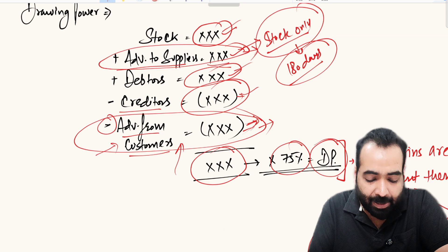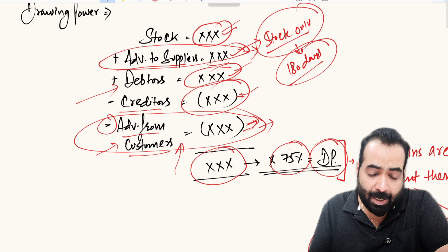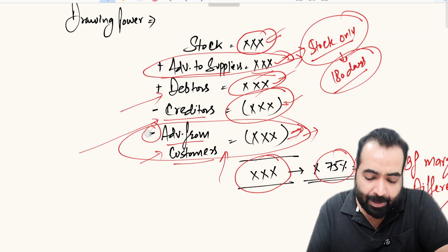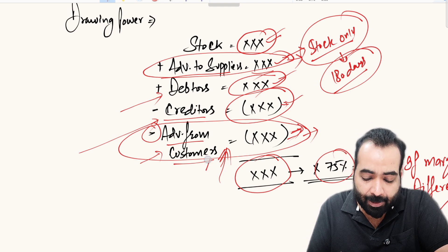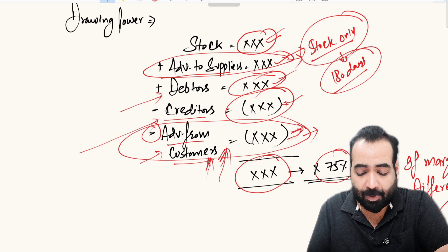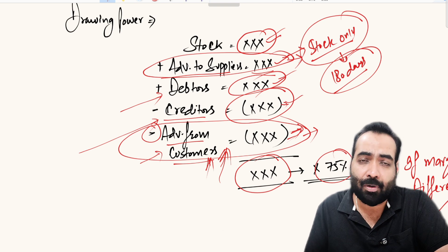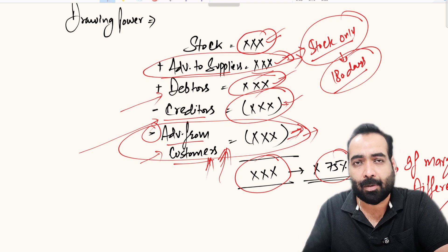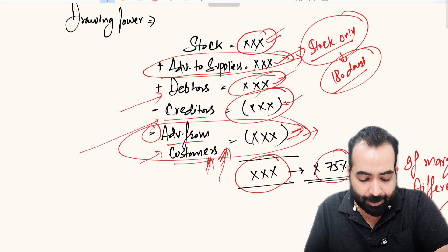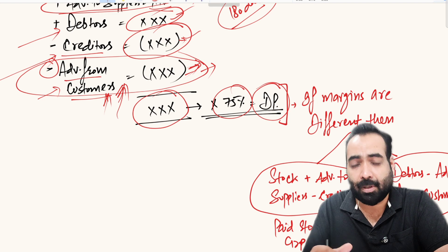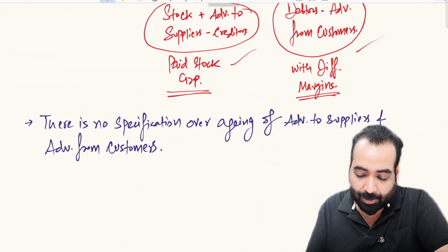For advances from customers, they are essentially like debtors. This is debatable — some say advances from customers should be in line with the debtor cycle (not older than 90, 120, or 180 days), while others say they should be treated like creditors and the full amount should be deducted. I personally favor deducting the full amount, as bankers should take a conservative approach. You should follow whatever policy your bank or organization adopts, as there is no hard and fast rule.